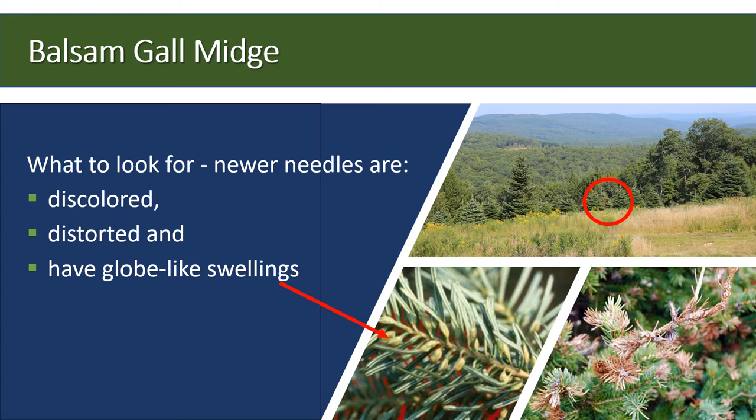Let's imagine being in a plantation. As you scan the trees, you notice one of the balsam fir trees showing discolored needles. Some of the newer needles are discolored, distorted, and have globe-like swellings near the base of them. This type of damage is caused by a small fly, a balsam gall midge. Midge adults begin laying eggs early in the spring. These galls — globe-like swellings near the base of the needles — are the result of the larvae feeding within the gall.